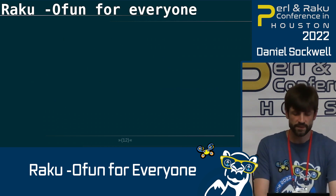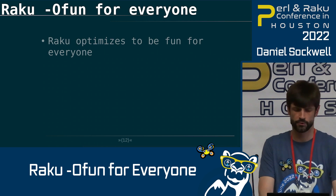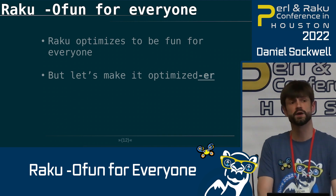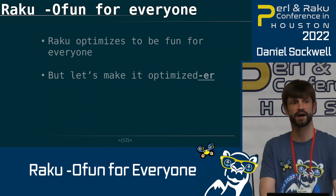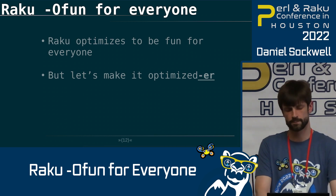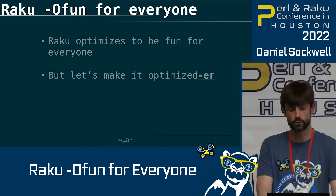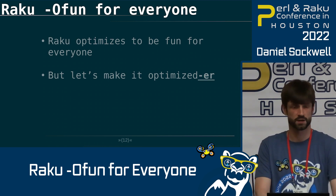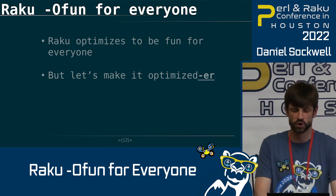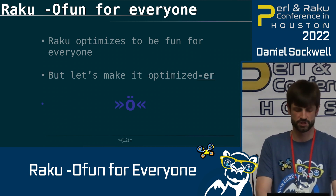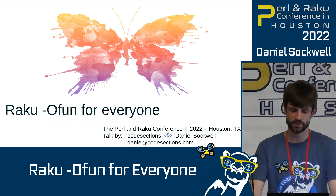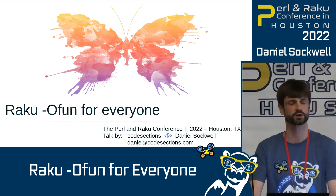And that's pretty much it. Raku really does optimize already to be fun for everyone — inclusive and welcoming, with all these different paths so that everyone can get into Raku. But we're a community-driven language and community, so we are far from perfect. Let's work to make it even more optimized. In the spirit of Camelia, our friendly butterfly mascot, let's try and work together and make Raku optimize for fun. Thank you very much.